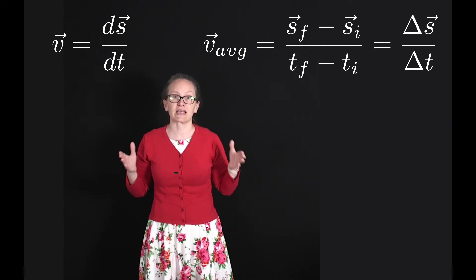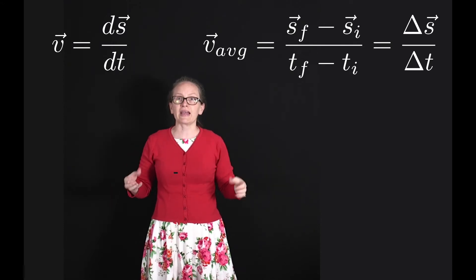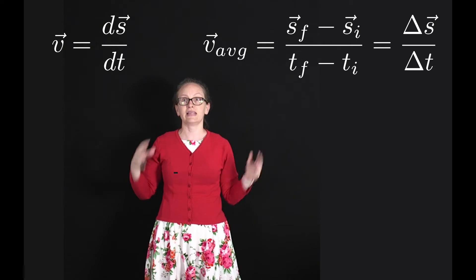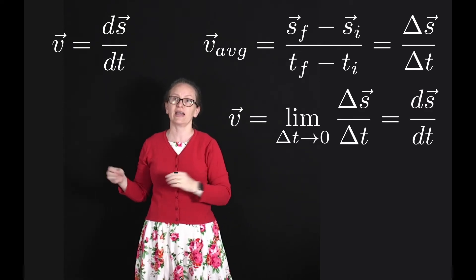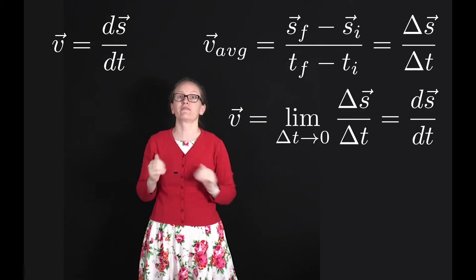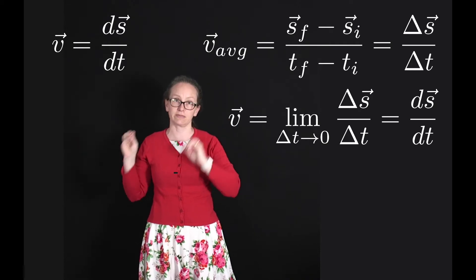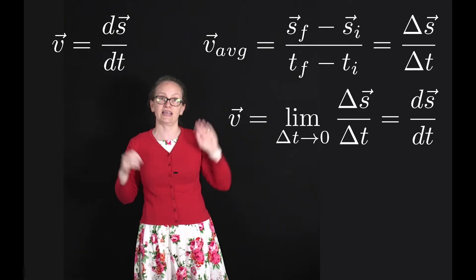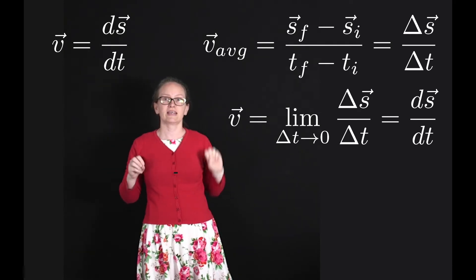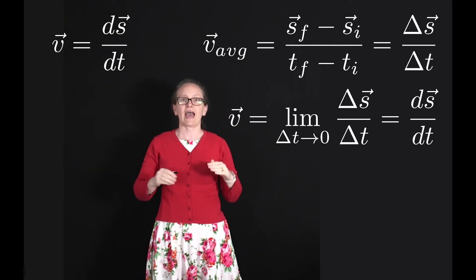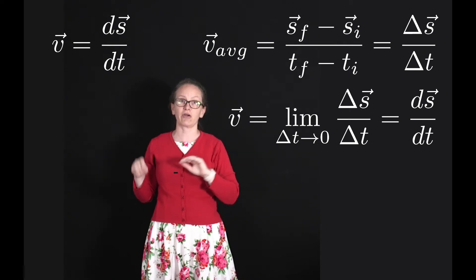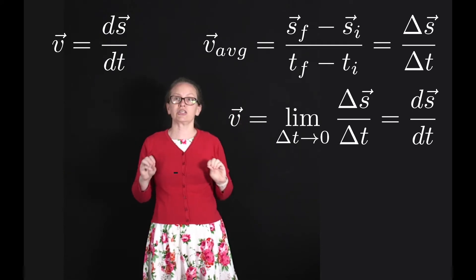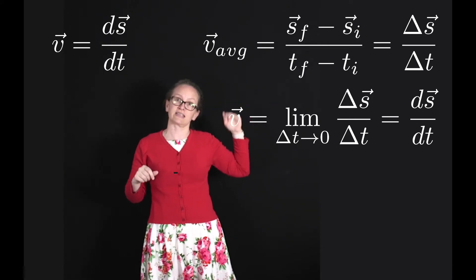Mathematically this makes sense. We'd expect that the instantaneous velocity would be the limit of the average velocity as the time over which it was measured became really, really small. So mathematically we can write that the instantaneous velocity v is equal to the limit as delta t goes to zero of the change in displacement over the change in time, which is equal to ds/dt.